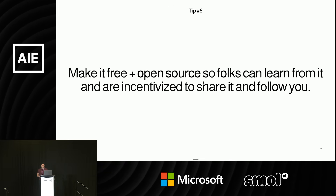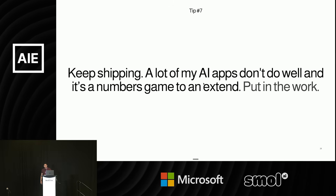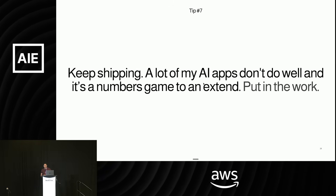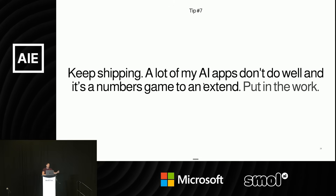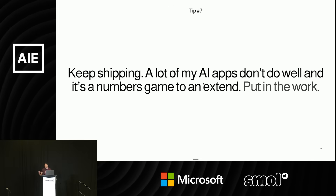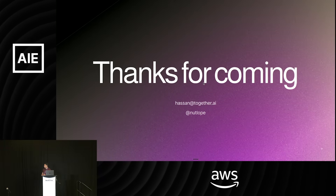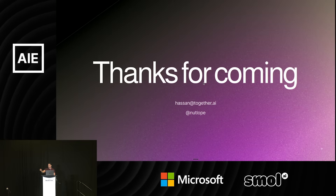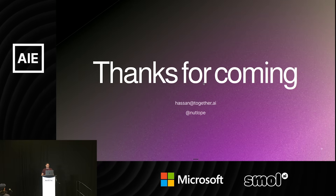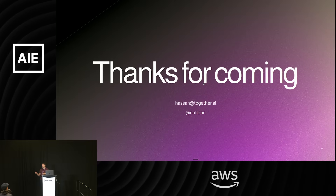Tip six: try to make it free and open source so folks can learn from you and are incentivized to share it — that's worked really well for me. Tip seven: just keep shipping. A lot of AI apps don't do very well — it's a numbers game. You have to keep building and building, and the more you build the more you realize what resonates, the faster you get at building, and the better you get at picking ideas. A lot of it just comes down to putting in the hours. You can find me on Twitter at nutlope or at hassan@together.ai. We also have a Together AI booth here — come and talk to us.